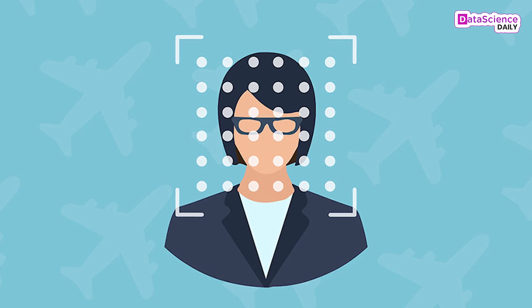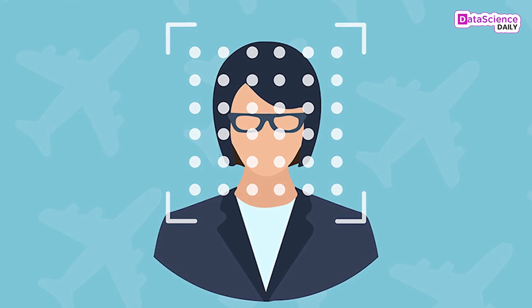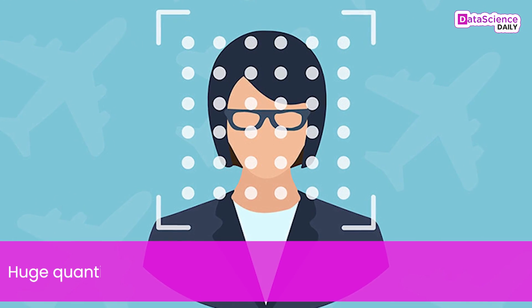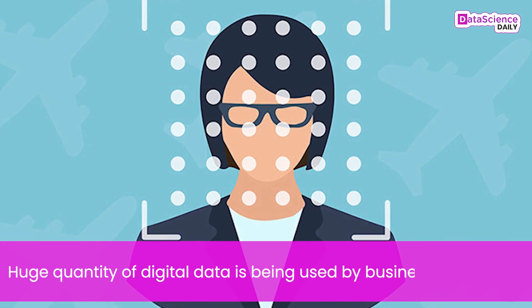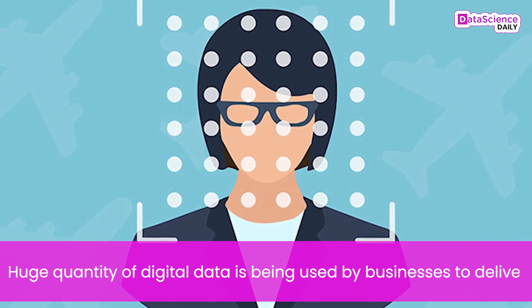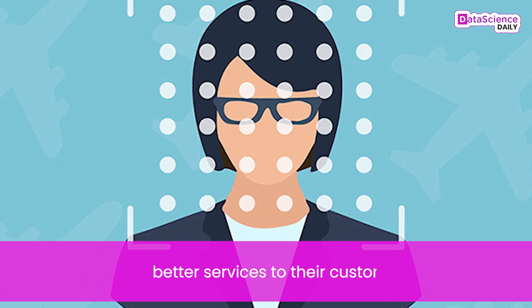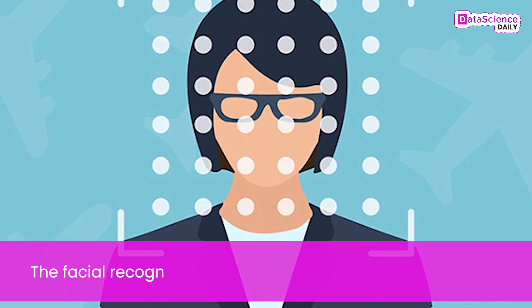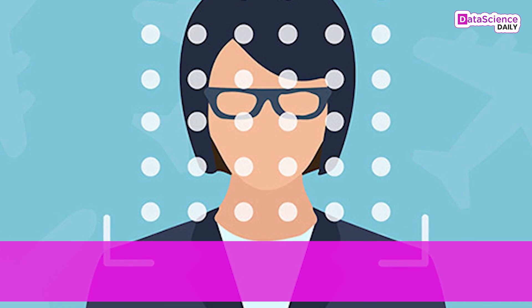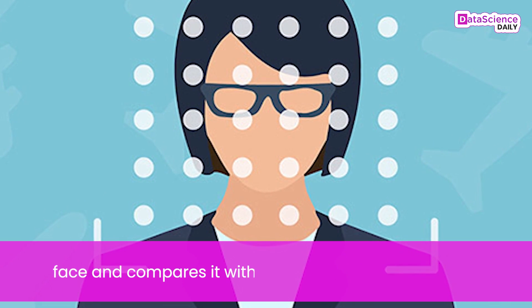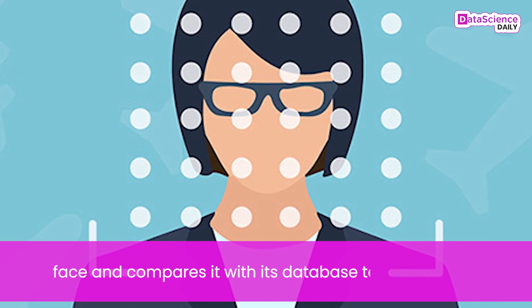Now let's understand how data science is used in facial recognition. Number 1: Identifying human faces. A huge quantity of digital data is being used by businesses to deliver better services to their consumers. The facial recognition system interprets all the features of the face and compares it with its database to find a match.